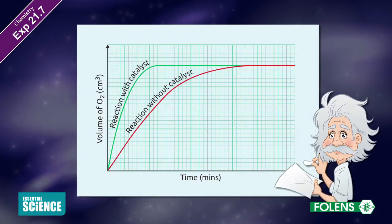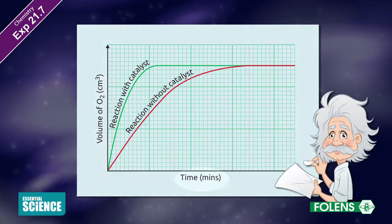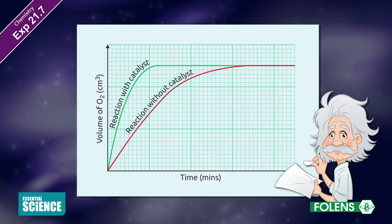Plot a graph of volume of oxygen on the y-axis against time on the x-axis on a sheet of graph paper. A graph similar to that shown on the screen will be obtained. To help you understand the role of the catalyst, a graph for the uncatalyzed reaction is also drawn.